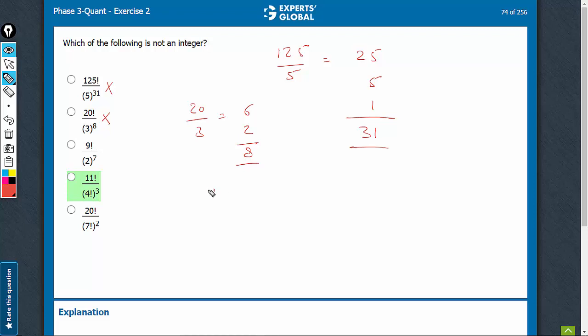2 raised to power what in 9? 9 upon 2 is 4. 4 plus 2, 6. 6 plus 1 more. 2 upon 2, 1, 7. This is also going to be an integer.